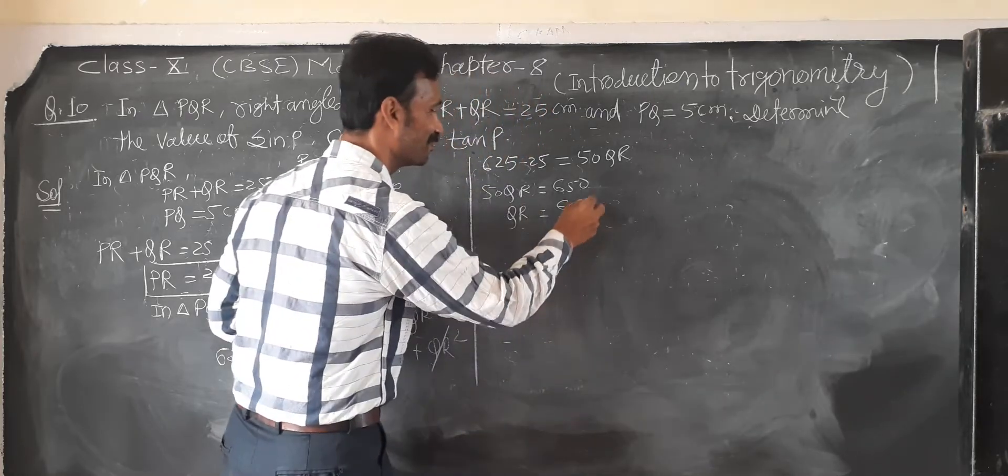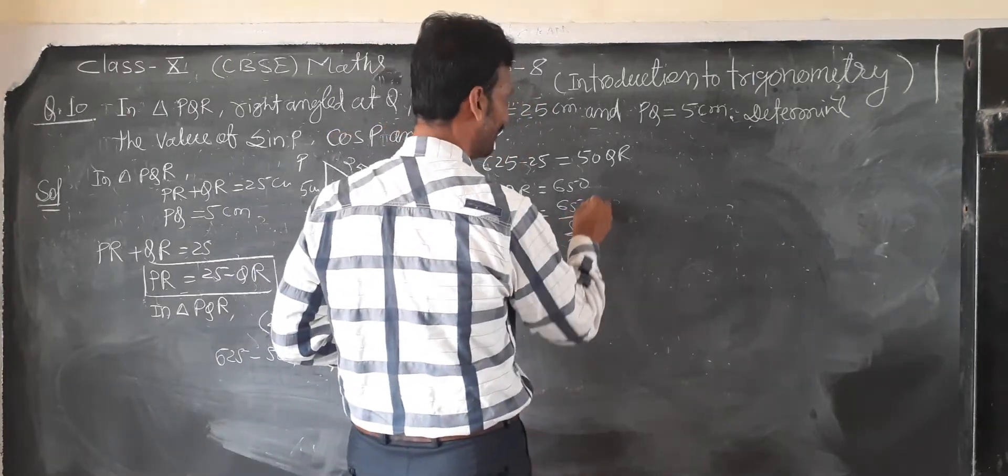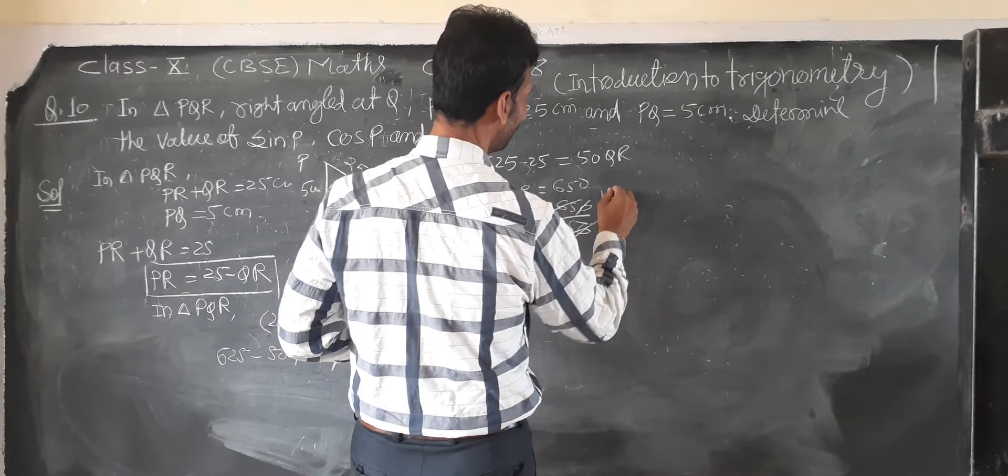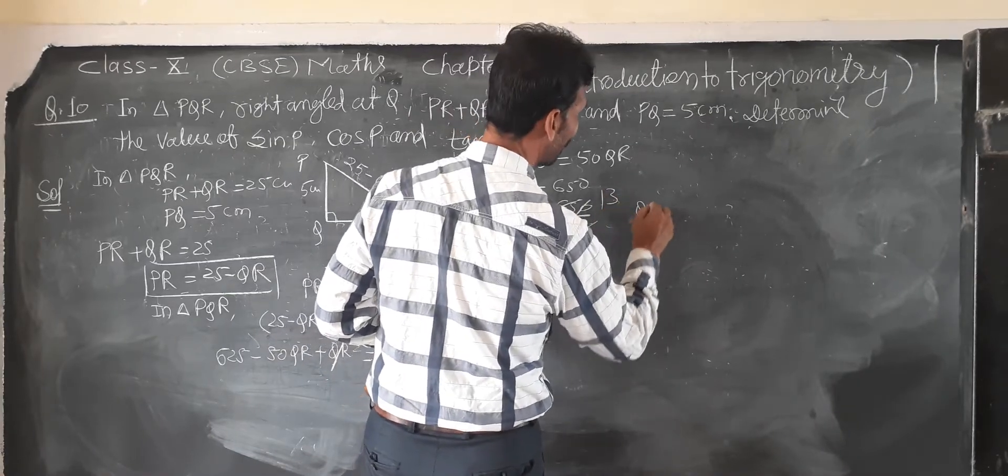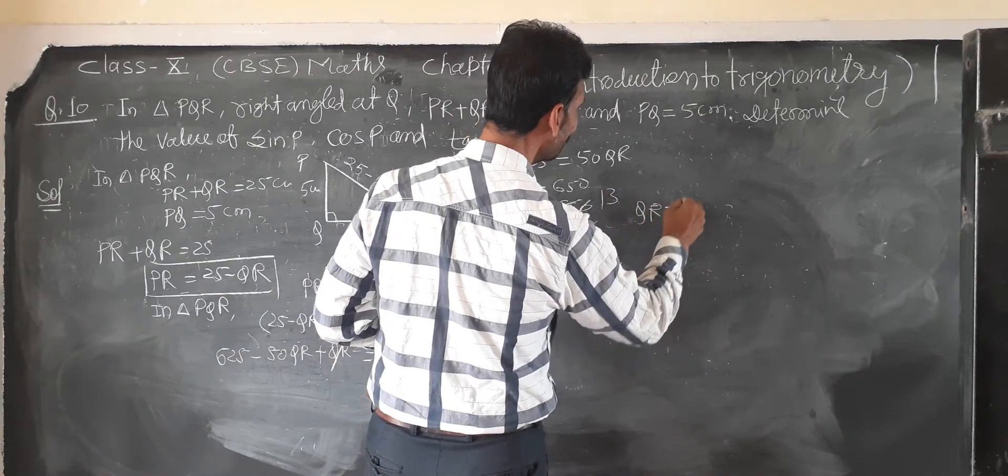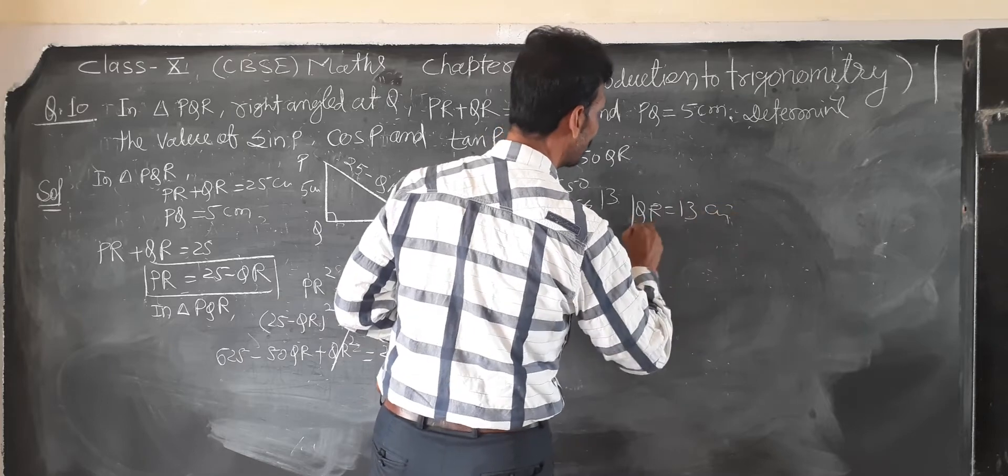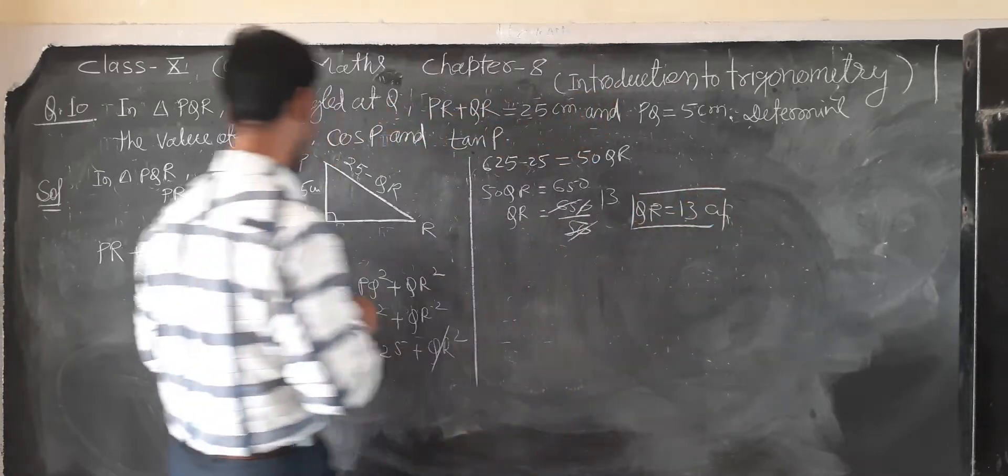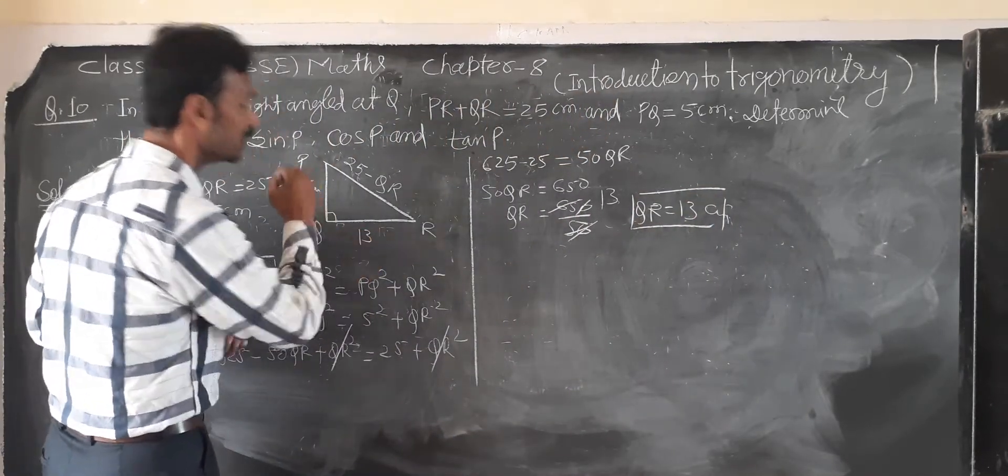50 with 5 and 0 to 0, 5 to 5, 5 to 3. So QR, value of QR equal to 13 centimeter. Value of QR, so this is 13 centimeter.